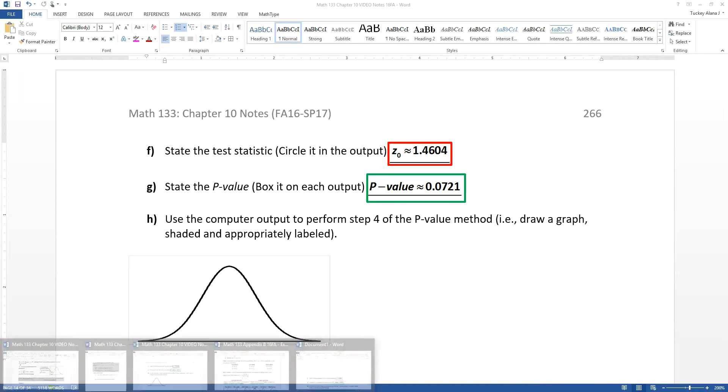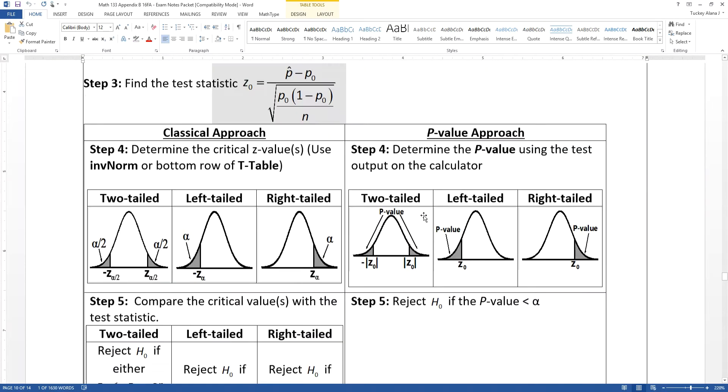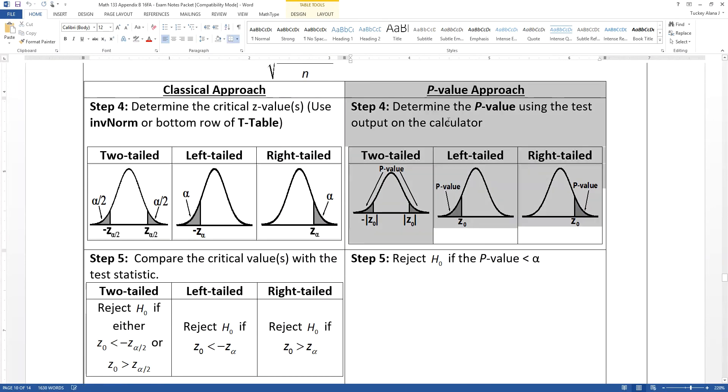So now I want to draw the picture for that. So let's go back and look at the test. We're on the p-value side of the house because we're looking at a p-value approach. So we want to ignore this whole classical approach business and look just at the p-value side.